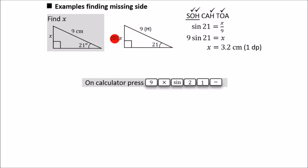The x is the opposite. The 9 is the hypotenuse. So figure out which bit of soh-ka-toa has both the opposite and the hypotenuse. It's soh.